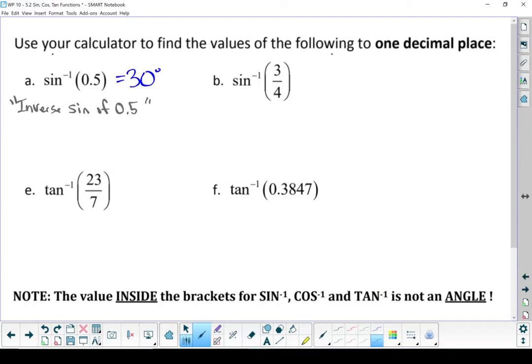Important note to point out here, when you're doing the inverse, the piece that goes in the brackets, the inverse piece, is not a degree, but it spits out 30 degrees. Basically, I'm saying the sine of what angle would give me 30 degrees. So this one spits out an angle, but the inside part is not an angle.